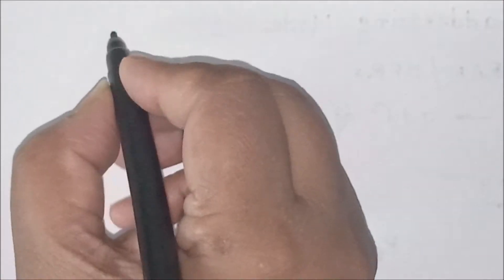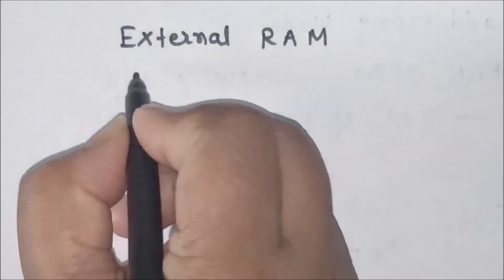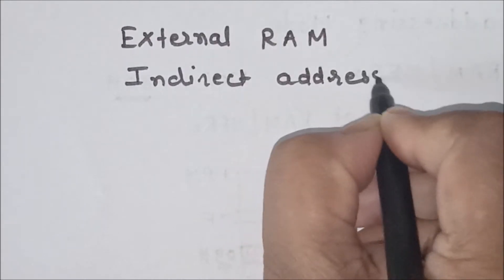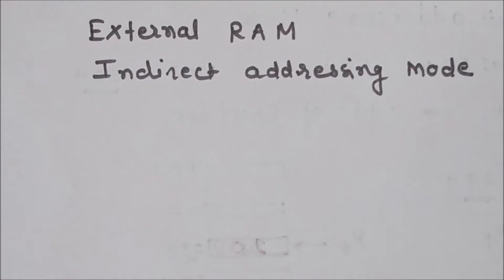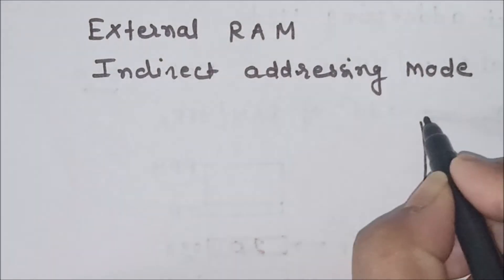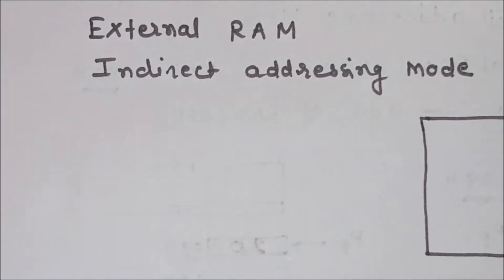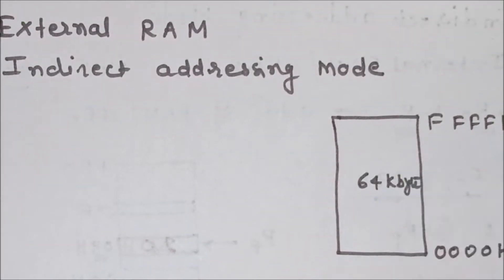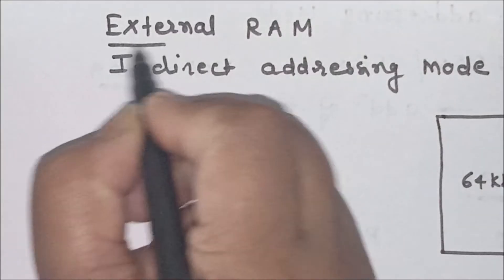Indirect addressing mode is also used for external RAM memory. For indirect addressing mode of external RAM, we can interface external RAM from 0000H to FFFFH, that is 64 kilobytes maximum of external RAM memory can be interfaced to a microcontroller. So to address this external RAM memory, we have to use a specific instruction.